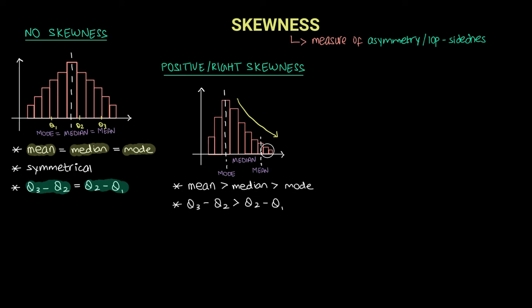In terms of quartiles for positive skewness, Q1 lies somewhere on the left, Q2 also lies toward the left, and Q3 lies more towards the right. As you can see, the distance between Q1 and Q2 is lesser than the distance between Q2 and Q3. So when commenting on the distribution, you will talk about the skewness, the mean, median, and mode, and also the quartiles.